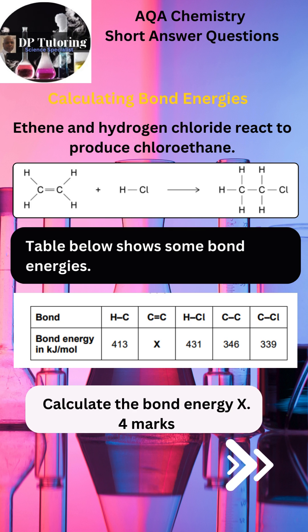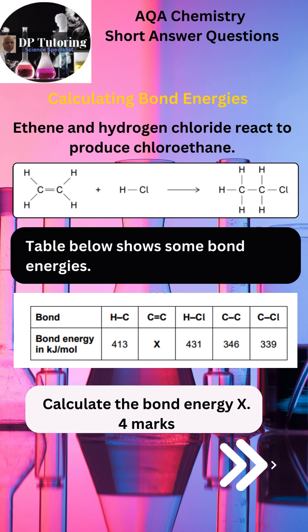AQA provides the bond energies that you will need for the calculation. As you will notice from the table, the carbon-carbon double bond has no bond energy — that is the energy you will need to find. The total mark for this question is 4. Please note that you don't need to remember the bond energies; AQA will always provide them.